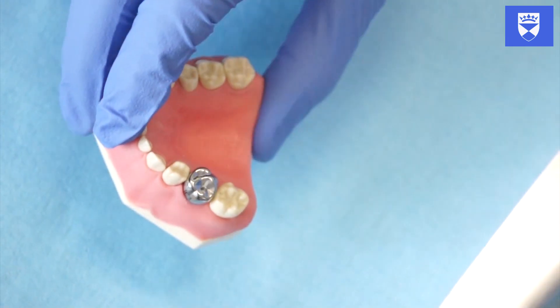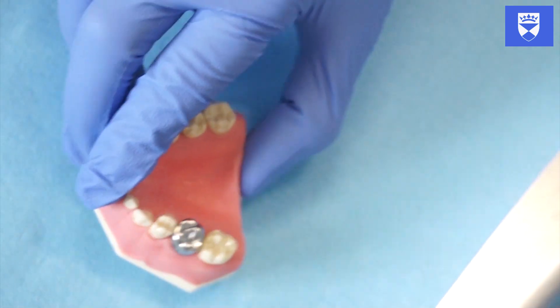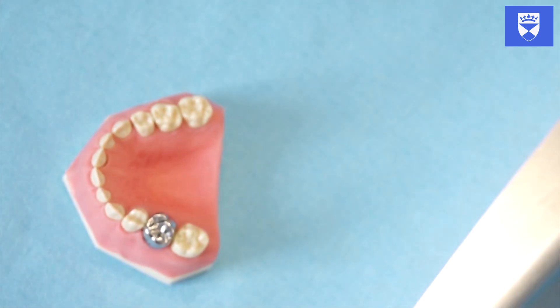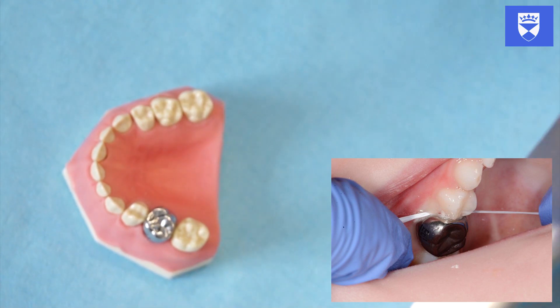Using a periodontal probe, ensure that no excess cement is present in the gingival sulcus. Gently floss the contact points to ensure that they are clear of cement.